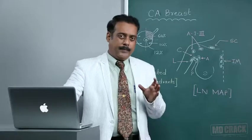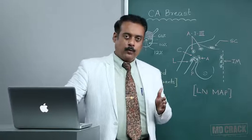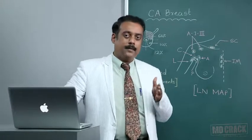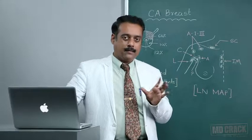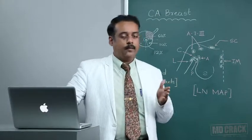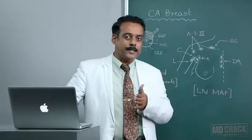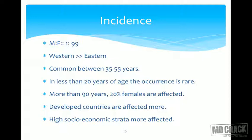We will see a little bit of the epidemiology and incidence of this disease. Both males and females have breasts, but the malignancy ratio is different — in males it is 1 while in females it is 99, so the ratio is 1 to 99. Western countries are much more affected compared to Eastern countries. The common age range is between 35 to 55 years. It is rare below 20 years, and developed countries with high socioeconomic or affluent lifestyles are more affected.